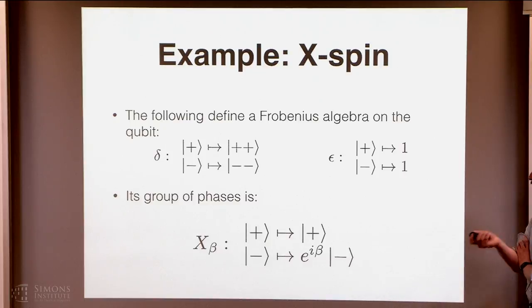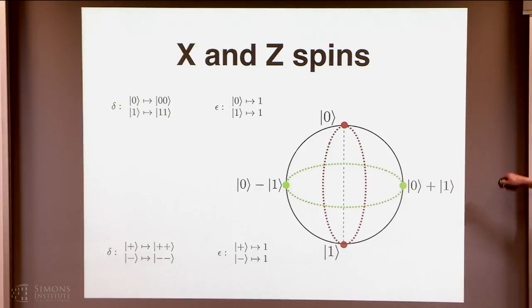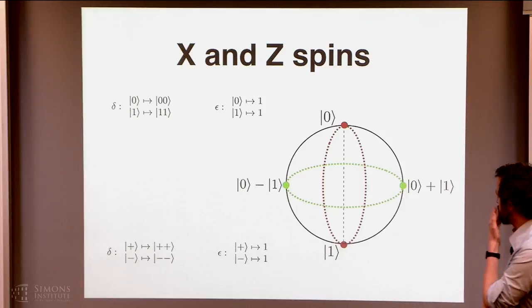So what we're going to do next is add another observable to the story. OK. So there's no reason we had to take the Z spin, so we can take also the X spin. And you can see, by the way I've written it down, it is exactly the same, except that instead of 0 and 1, I have the plus and minus kets. So in terms of the Bloch sphere, that's what we had before. Here's the plus ket, here's the minus ket. And so the phases for the X observable are, no surprise, the rotations are the X axis.